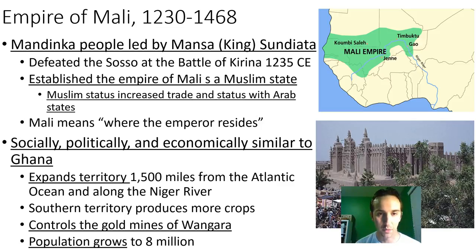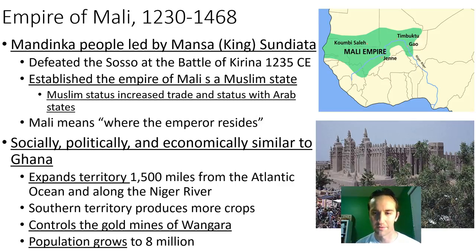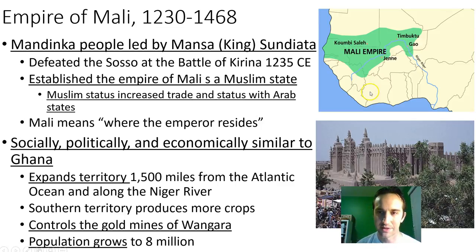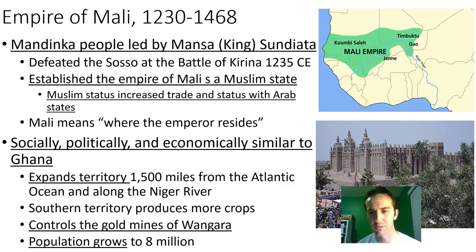Mali literally translates to 'where the Emperor resides.' Socially, politically, and economically it's similar to Ghana — built on the ashes of the Ghana Empire, but expanded. The territory stretched 1,500 miles from the Atlantic Ocean all the way along the Niger River. The southern territory started to produce even more crops. Instead of just taxing the gold mines of Wangara, they controlled them. With this extra gold, territory, and food, their empire really started to grow, and the population grew to 8 million.